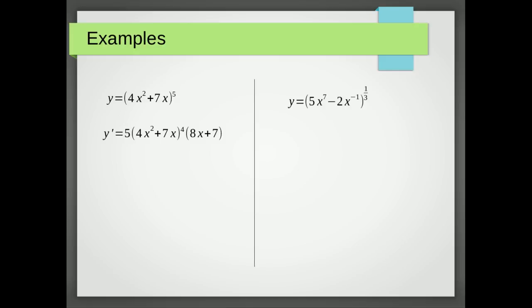This next example is slightly more complicated but only because we've changed the powers. So we're going to multiply by a third. We're going to keep the bracket the same.